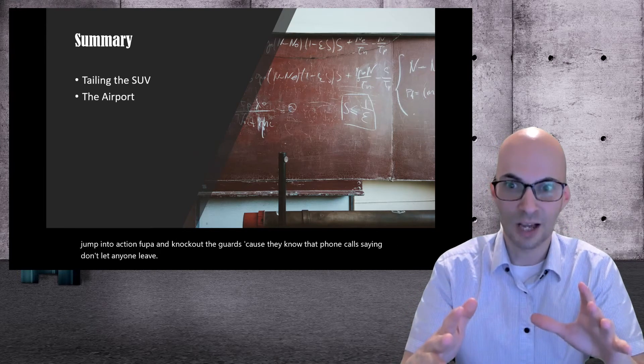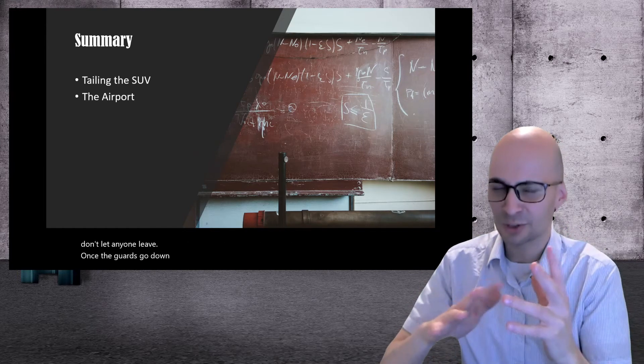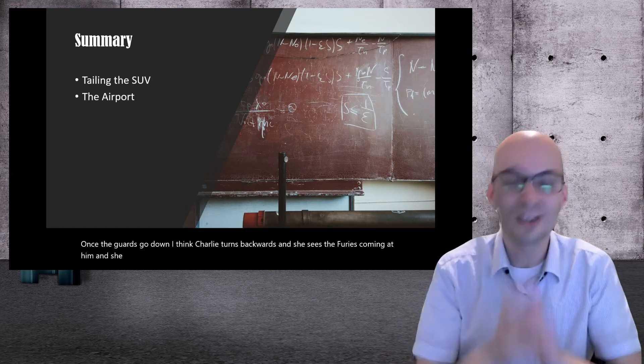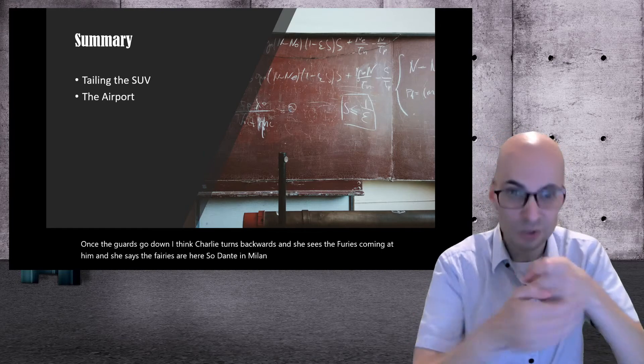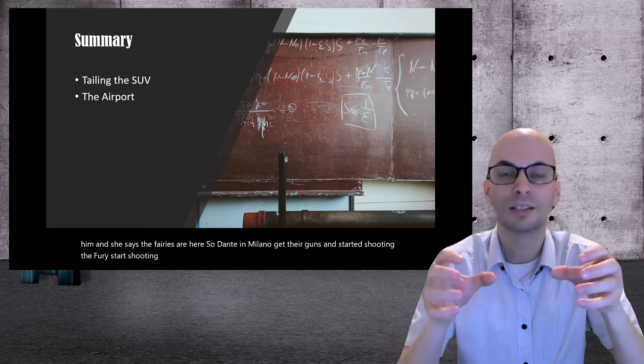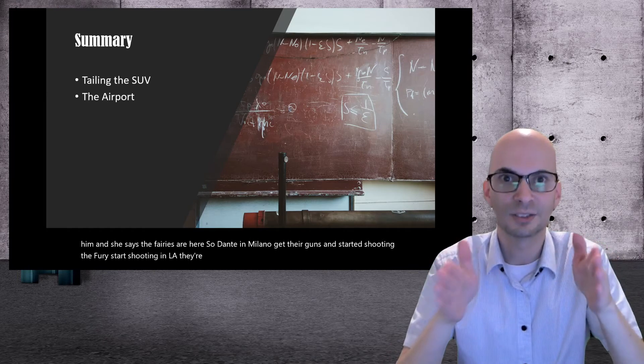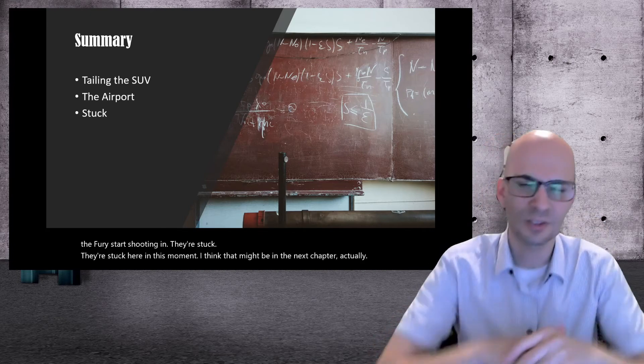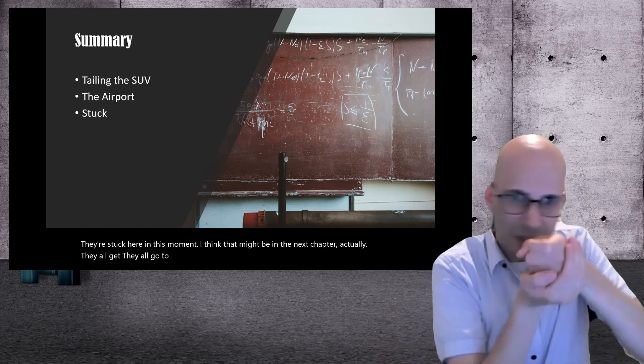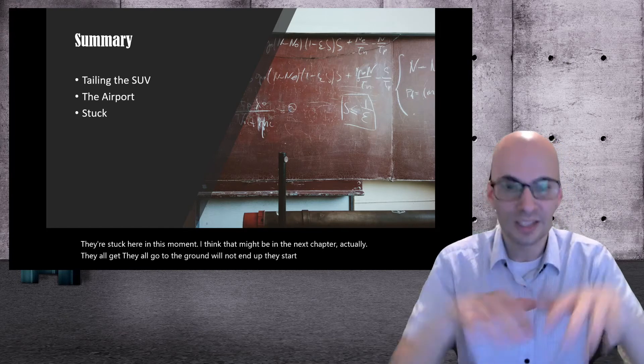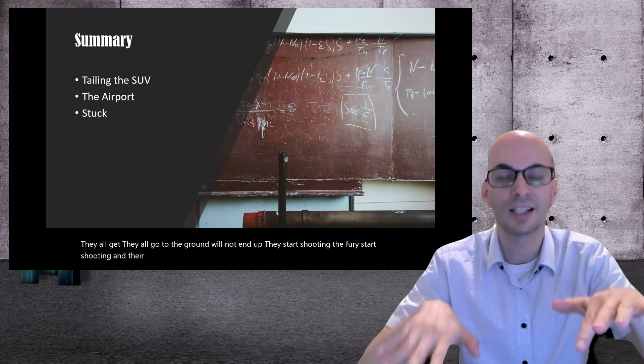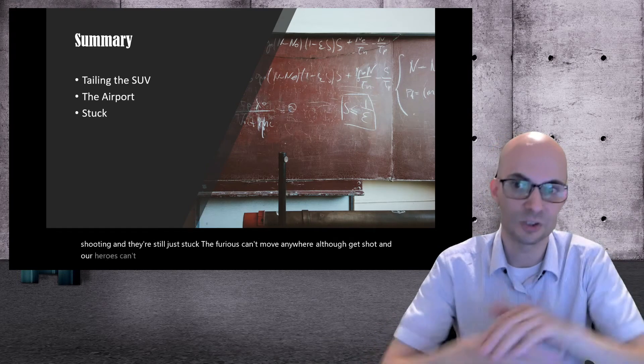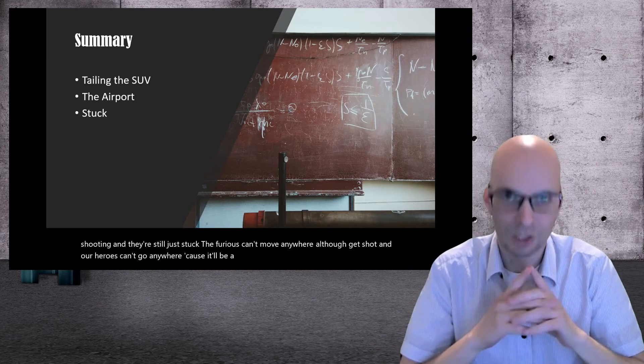Well, once the guards go down, I think Charlie turns backwards and she sees the Furies coming at them. And she says the Furies are here. So Dante and Milana get their guns. They start shooting and the Furies start shooting. And oh, they're stuck. They're stuck here in this moment. They all go to the ground. Milana and Dante start shooting. The Furies start shooting and they're both just stuck. The Furies can't move anywhere or they'll get shot, and our heroes can't go anywhere because they'll get shot. Oh, what to do, what to do.